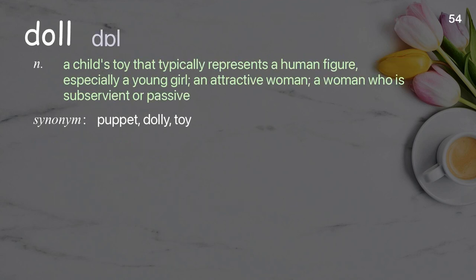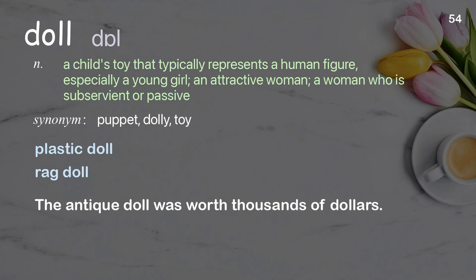Doll: a child's toy that typically represents a human figure, especially a young girl; an attractive woman; a woman who is subservient or passive. Examples: plastic doll, rag doll. The antique doll was worth thousands of dollars.